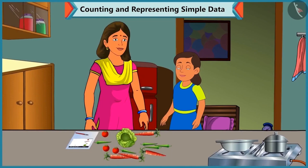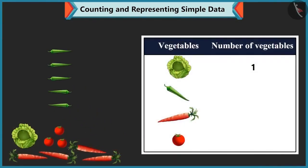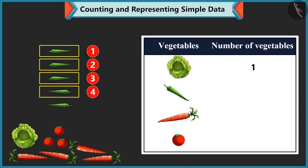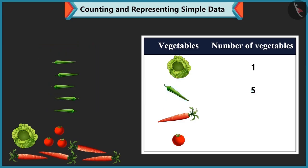In the same way, we have to count the remaining vegetables and write the number against it. Yes, Mummy. I understood. There is 1, 2, 3, 4 and 5 green chillies. So, we write 5 against green chilli.